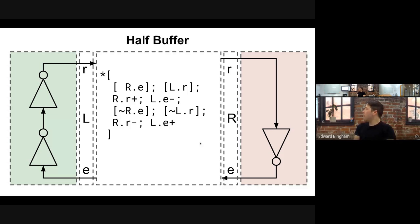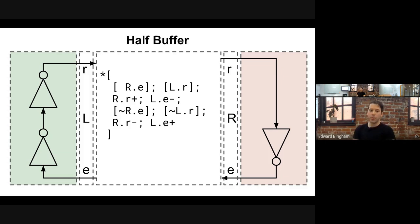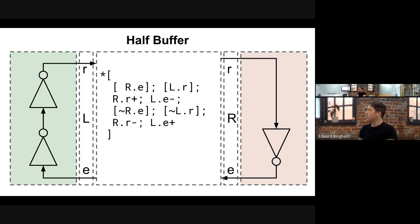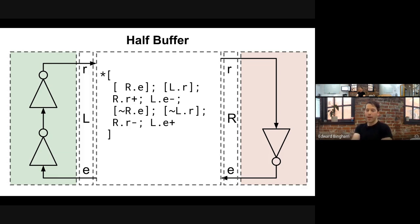We now have the optimized handshaking expansion for the half buffer. The next step is to turn it into a set of production rules. We're skipping the part of formal synthesis that looks for state conflicts and inserts state variable transitions — buffers mostly don't need it. So we run an algorithm called guard strengthening, which looks at one transition at a time and identifies all the required predicates in the guards.